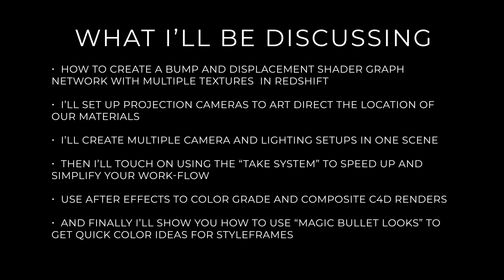A lot of my work leans towards data visualization, but I also do a lot of photorealistic lighting, rendering, and animation. Today, I'm going to be discussing how to create a bump and displacement shader graph network with multiple textures in Redshift. I'll set up projection cameras to art direct the location of our materials, create multiple cameras and lighting setups in one scene, and touch on the take system to speed up and simplify your workflow. I'll use After Effects to color grade and composite the C4D renders.